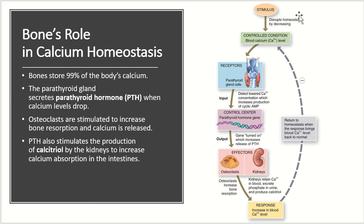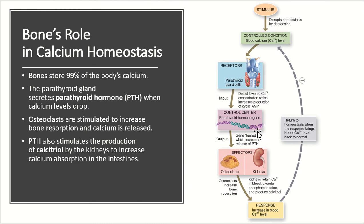Looking at this feedback loop: the stimulus is a disruption in calcium homeostasis — specifically a decrease in blood calcium levels. The receptor is the parathyroid cells, which detect that decrease in calcium concentration, and when they detect this, it triggers the production of cyclic AMP. This triggers the control center — the parathyroid hormone gene — to increase production and release of parathyroid hormone.